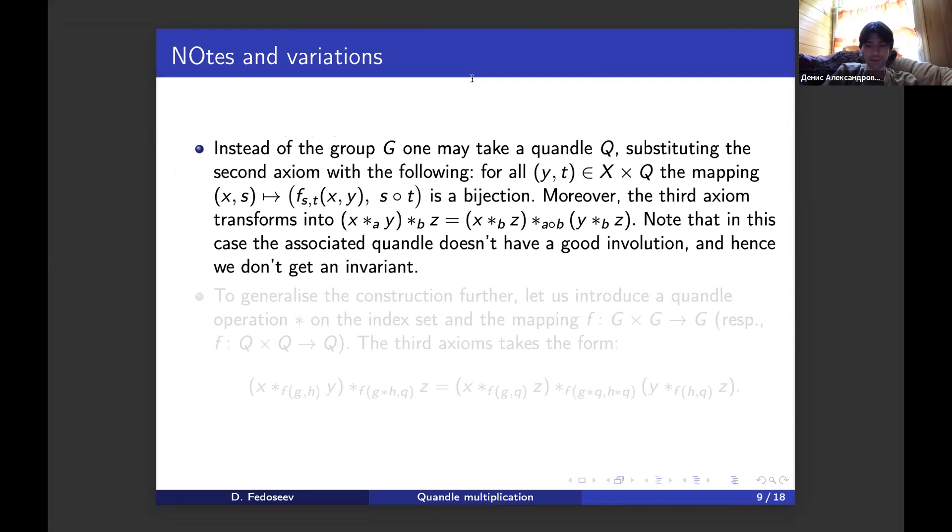We have also tackled this construction and varied it a bit. The first variation is known also from Ishii's works. We can actually take not the group G but a quandel Q and change the axioms. The second axiom about the composition transforms into a very similar one. The conjugation is substituted by circle b, where circle is the quandel operation on the index set. So the G-family of quandels must be something like the partial case when our indexing quandel is conjugation quandel.